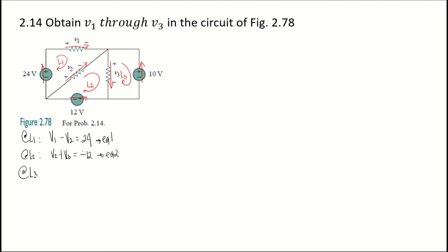At loop 3, the voltage drop of V3 opposes the direction of the loop, giving negative V3, equal to the voltage supply of 10 volts, which also opposes the direction of the loop — so negative 10. Dividing both sides by negative 1, we get V3 equal to 10 volts.